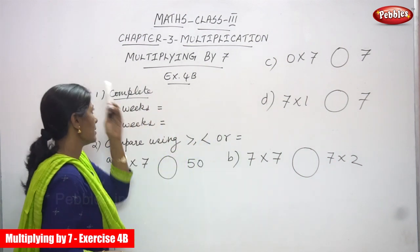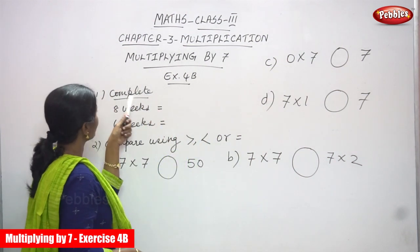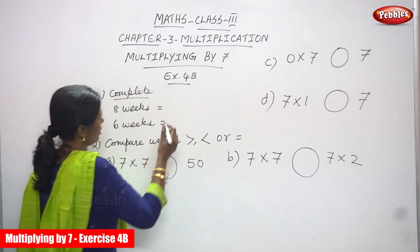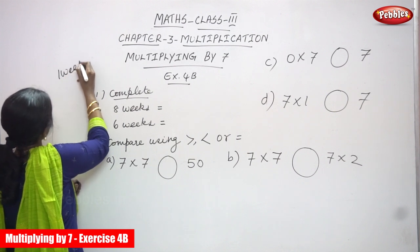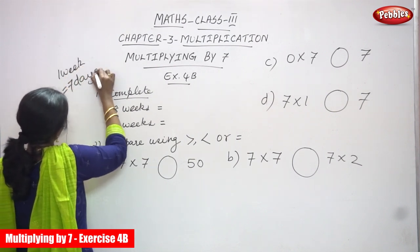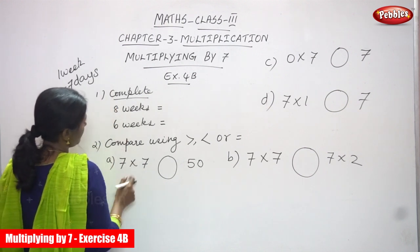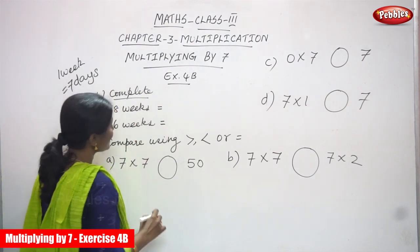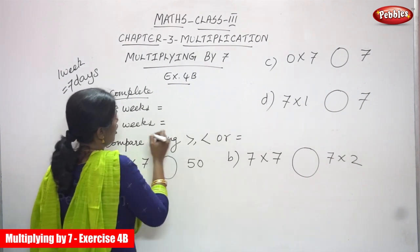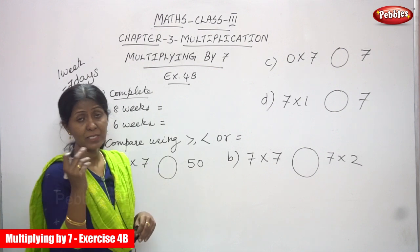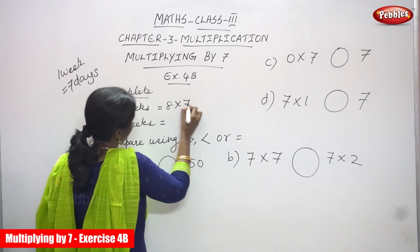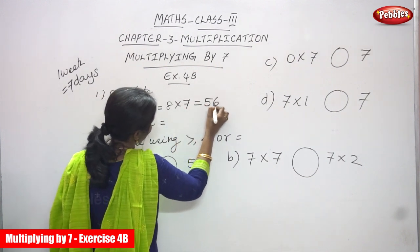Now we are going to see exercise 4b — complete 8 weeks. 1 week means 7 days. So you have to multiply 8 weeks: 1 week is equal to 7 days, so you have to find out for 8 weeks. That means 8 into 7.